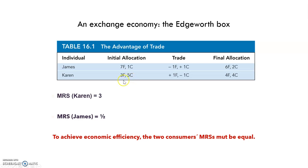To decide whether a trade would be advantageous, we need to know their preferences for food and clothing. Karen's MRS is three because she has a lot of clothing and little food. James's is the opposite — he has a lot of food and very few clothes, so he would exchange only 0.5 units of clothing to get one more unit of food. This creates room for mutually advantageous trade. To get another unit of food, Karen would trade up to three units of clothing, but James will give up one unit of food for just 0.5 units of clothing.